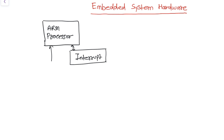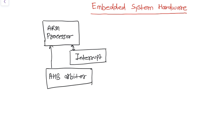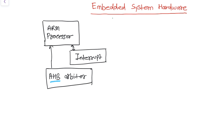And then we have here an AHB arbiter. We will discuss this AHB arbiter. And after that we have here a bus, which is known as the AHB and APB bridge.